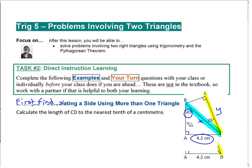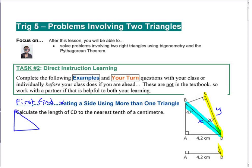To find x, you've got to set up a trig equation using the other two known values. If it helps, draw that triangle separately. You've got the right angle, 47 degrees, the side 4.2, and x here.